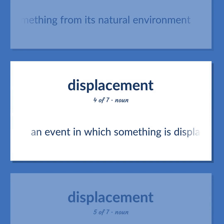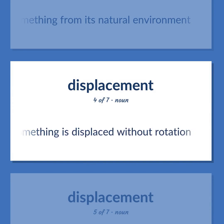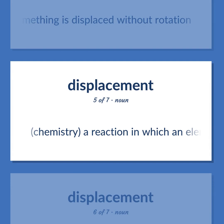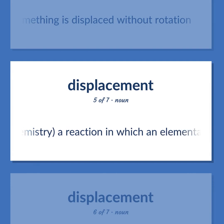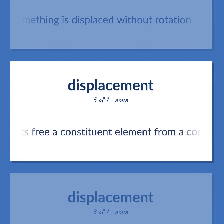Displacement: An event in which something is displaced without rotation. (Chemistry): A reaction in which an elementary substance displaces and sets free a constituent element from a compound.